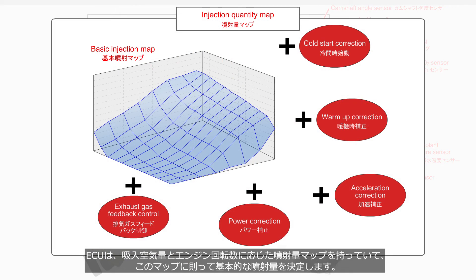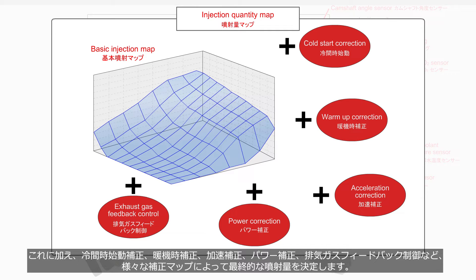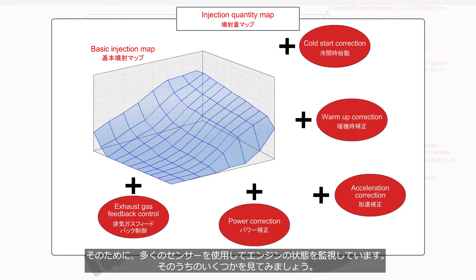The ECU has an injection quantity map that corresponds to the air intake volume and engine speed, and it calculates the basic injection quantity based on this map. Furthermore, various correction maps — such as cold start correction, warm-up correction, acceleration correction, power correction, and exhaust gas feedback control — are used to determine the final injection quantity. For this purpose, the ECU monitors the engine condition by utilizing various sensors.